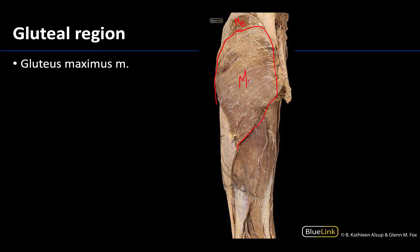The gluteus maximus is the largest muscle — not the longest, but the largest muscle of the body. It's going to have attachments on the posterior ilium, the sacrum, and the coccyx, and the majority of its fibers will insert on the IT band or IT tract, with some inserting directly onto the posterior-lateral femur region. If you can clearly see a muscle inserting into the IT band and being very superficial, you are likely looking at the gluteus maximus.